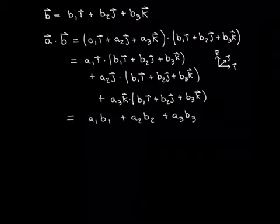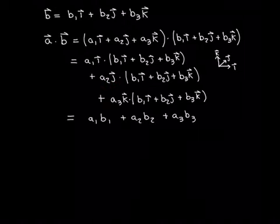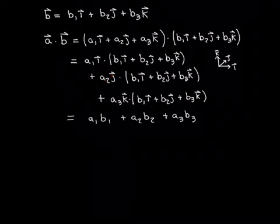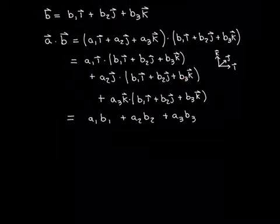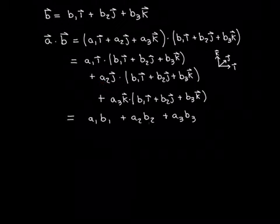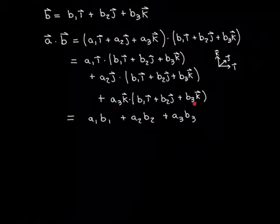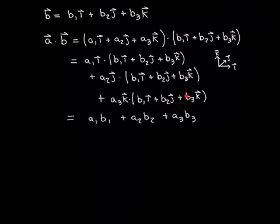Applying the same logic to the second dot product: A2j dotted with B1i plus B2j plus B3k. The vector A2j has length A2. The i and k components are perpendicular to j and contribute nothing, so only the B2j component matters, giving us A2 times B2. Similarly, for the third dot product, A3k has length A3, and only the B3k component is in the same direction, giving us A3 times B3.